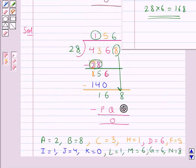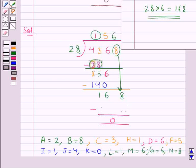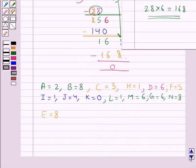Now obviously PQR would be 168 since its remainder is 0. So we write here 168. That is we get P is equal to 1, Q is equal to 6, R is equal to 8.